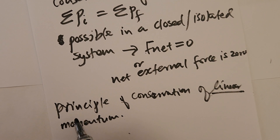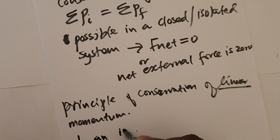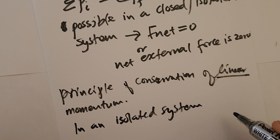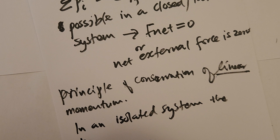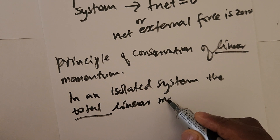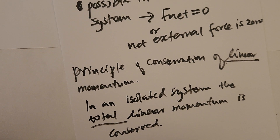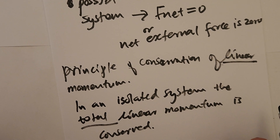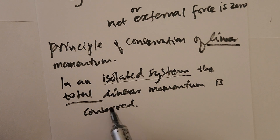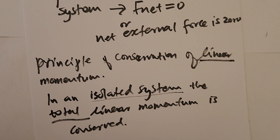The Principle of Conservation of Linear Momentum states: in an isolated system, the total linear momentum is conserved. In our course we deal only with linear momentum, which can be horizontal, vertical, or along an inclined plane. The first step when solving these problems is always to write: sigma P_i equals sigma P_f.